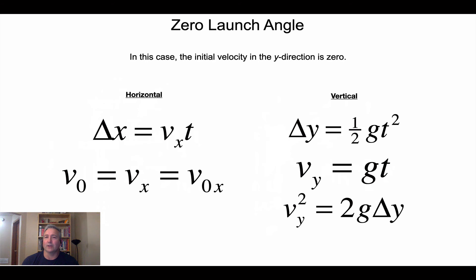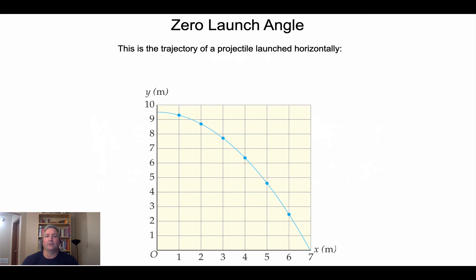The path the projectile follows is a parabolic path. The dots shown represent each moment in time: horizontal displacement is the same between each dot — a constant rate — but vertical displacement increases because the object is speeding up downward. This is the second half of a parabola from the top down. For example, a projectile launched from 9.5 meters up moves one meter horizontally each interval at a constant rate while speeding up faster and faster going downward.